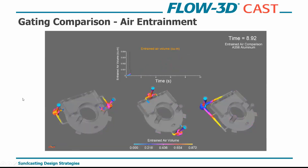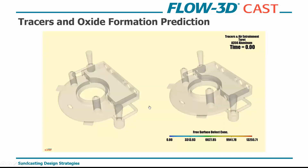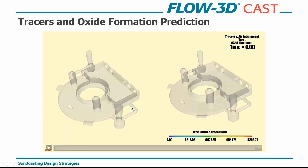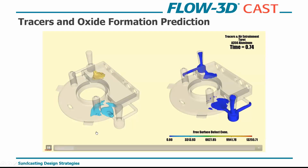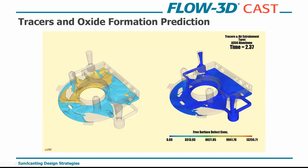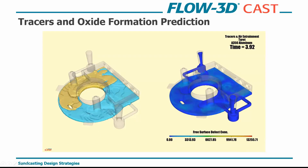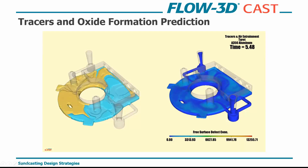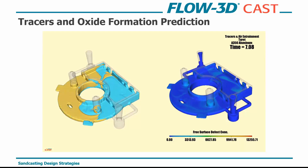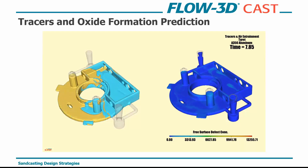To showcase more functionality, we look at free surface defect concentration. Flux surfaces have been added to the gates as tracers so we can see where metal from each individual gate ends up in the mold. This gets into a little more detail design but gives you a better direction on what's happening.